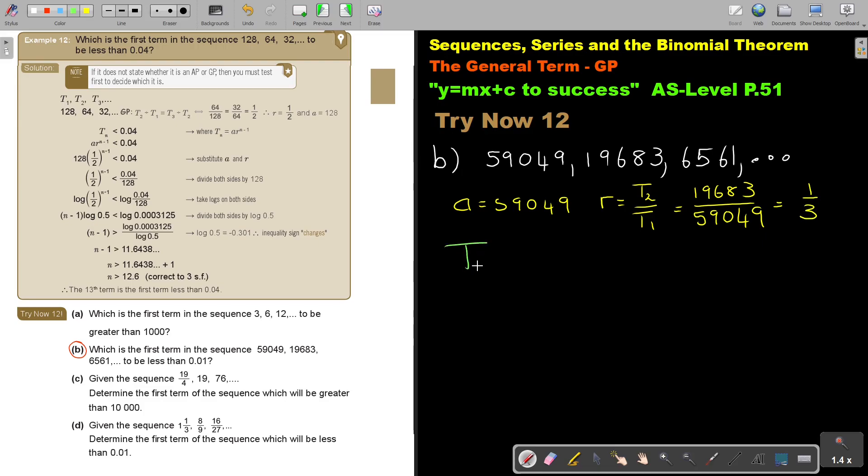Now we can start. So which is the first to be less than 0.01? So basically, don't forget, what is your general term of a GP? That's your general term. So if I'm going to substitute, I can even, if I want, you can even write it here first. Now I think as soon as you put that in, already start filling in the details. So in the place of A, it's going to be 59049. And in the place of R, it's that third. And now it's N minus 1. And it's 0.01.